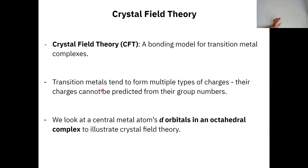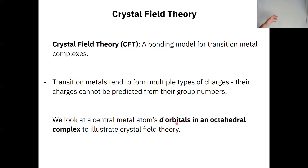Crystal field theory focuses specifically on transition metals, and we've always said that transition metals were kind of like weirdos — they don't follow the normal rules. Every time we were looking at periodic table trends, we'd say 'except for the transition metals.' The main focus is going to be these d orbitals that they have. Main group elements may have d orbitals, but they're completely filled, whereas transition metals have d orbitals acting as valence orbitals that participate in bonding.